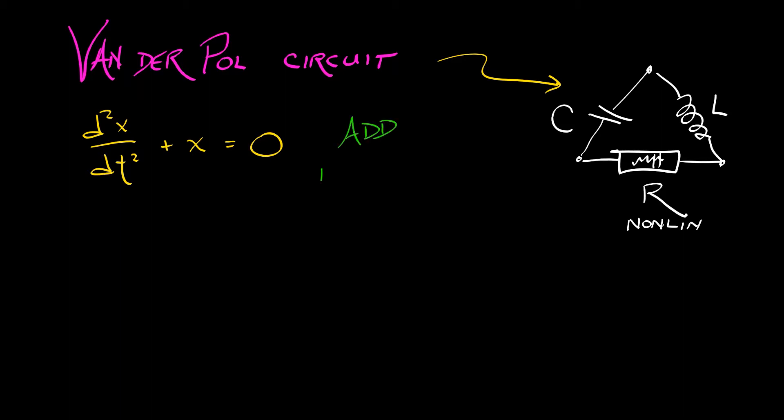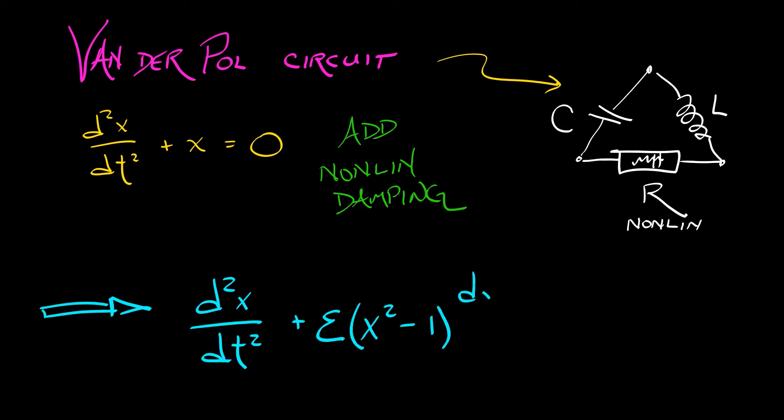But now what you do is you add some friction, some nonlinear damping to this equation. The model, the second order differential equation that one gets as a result is the Van der Pol equation. That is the second derivative of x with respect to time plus epsilon times quantity x squared minus one times dx dt plus x equals zero.